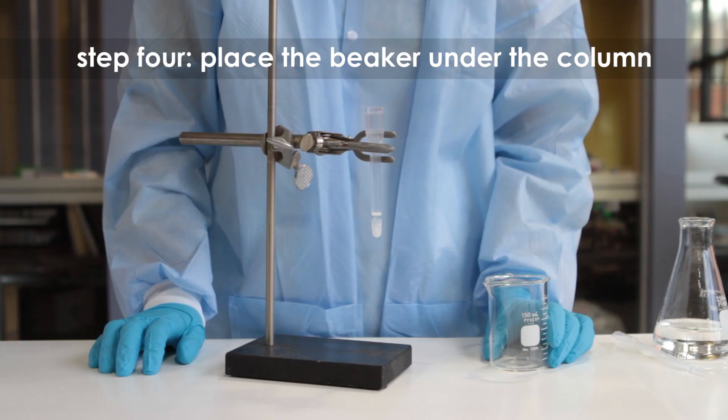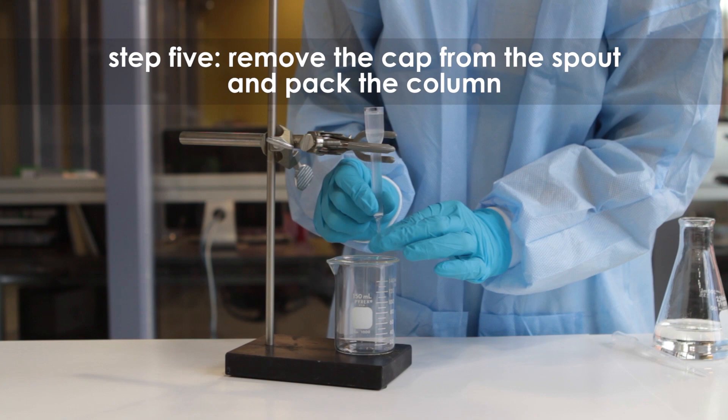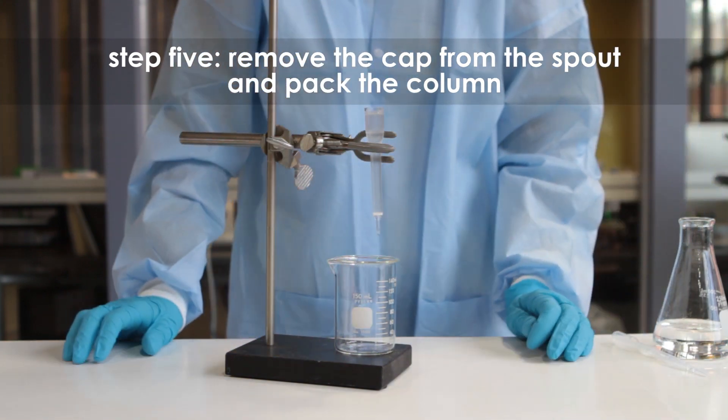Step 4: Place an empty beaker under the column. Step 5: Remove the cap from the spout of the column. The buffer will begin to flow through the column.